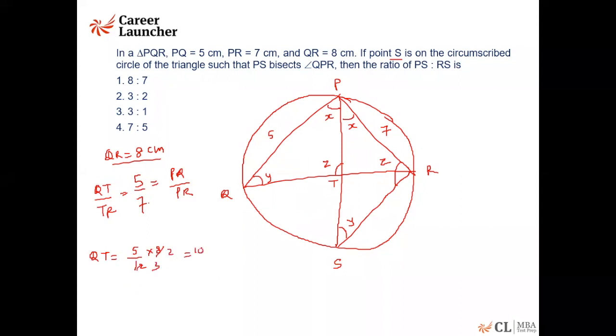So we can say that QT would be equal to 5 by 12 of 8, which is equal to 10 by 3. So let me write this as 10 by 3.